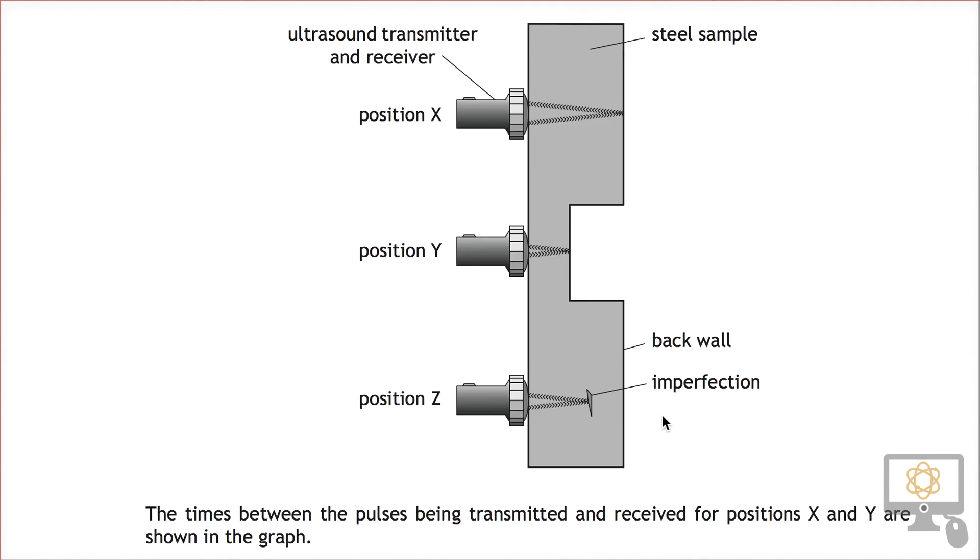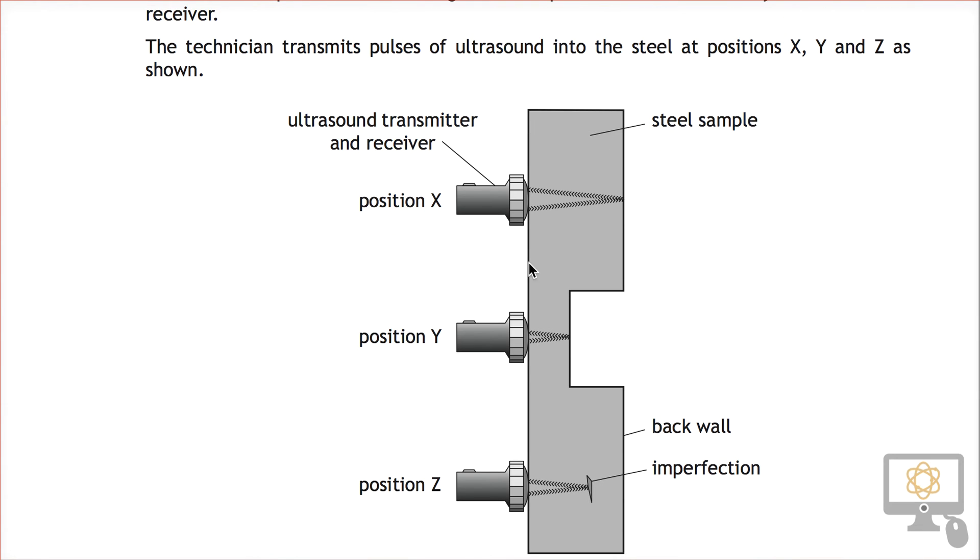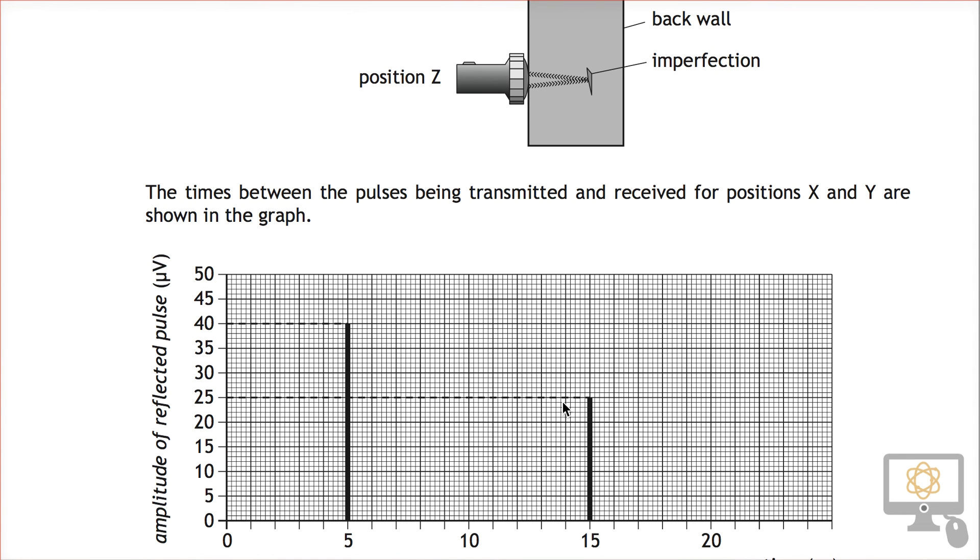You would expect this one is going to take longer to travel through the steel and back again. It has to travel farther. This one is going to take less time. So from that perspective I would predict that the one that takes less time is going to be Y and the one that takes more time is going to be X.